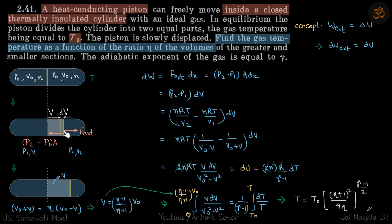Because the piston is moved very slowly and is heat-conducting, the temperature of the whole gas will be the same at all times. The whole vessel is thermally insulated, meaning there is no heat exchange across the vessel. So any external work done on the piston must be converted into a rise in internal energy: W_external = ΔU.